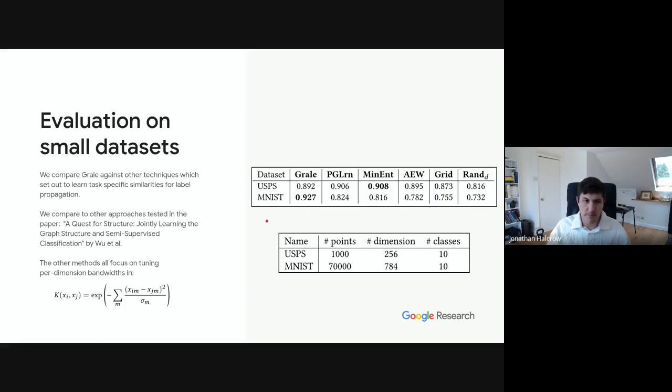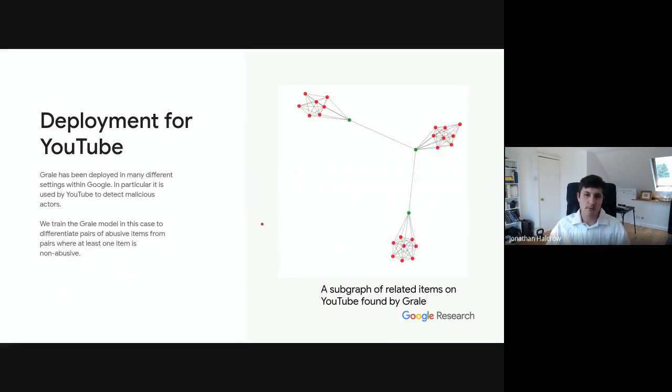But the real point of this paper is not really to show performance on small data sets. What we really want to talk about is the deployment of GRAIL on very large scale settings. So within Google, GRAIL has been deployed for many different problems at this point. One particular application is used by YouTube to try and detect malicious actors. And for YouTube, we train the GRAIL model to try and differentiate pairs of abusive items from pairs where at least one item is non-abusive.